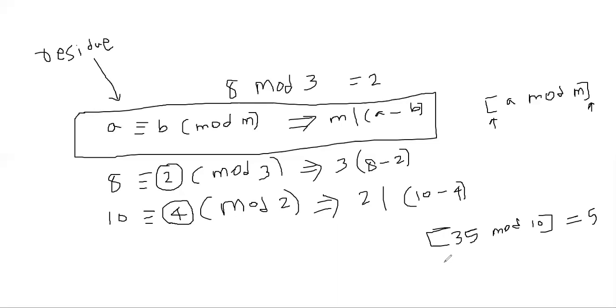You are allowed to write 25 is congruent to 35 mod 10. This is perfectly fine as well because 10 divides the difference between 25 and 35.